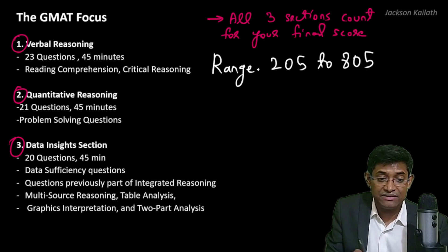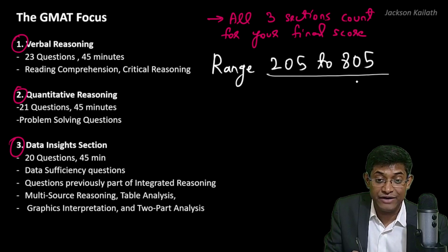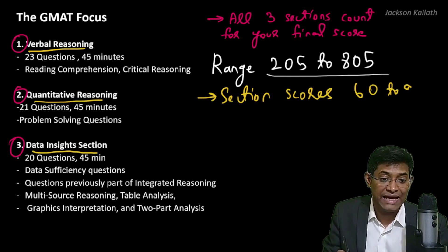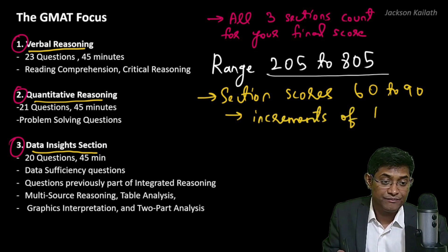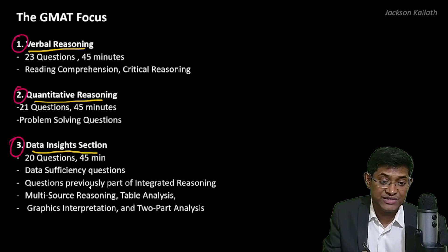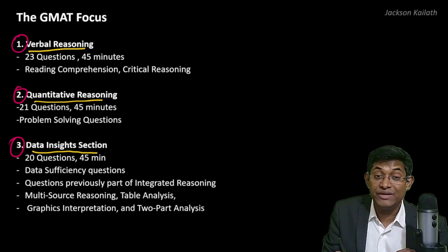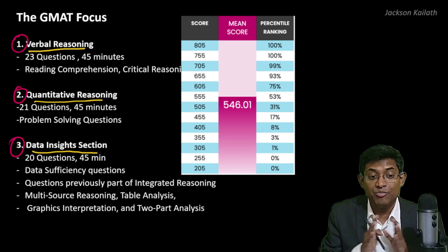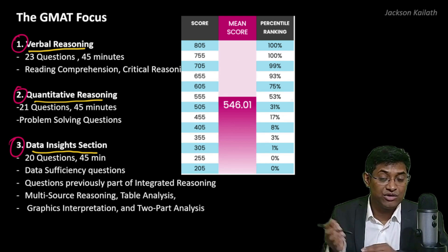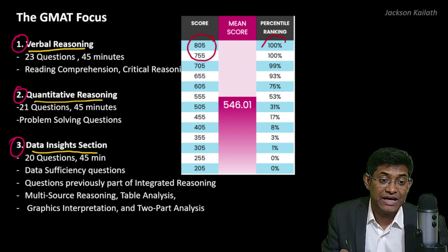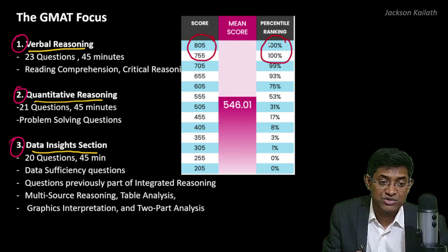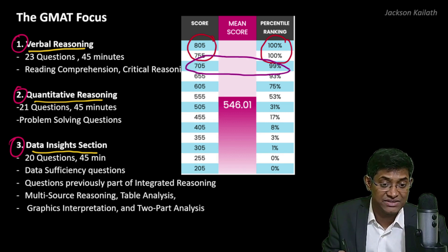The range is between 205 and 805. For individual sections, scores range between 60 and 90 and move in increments of one point. On mba.com there is a chart comparing score and percentile interpretation. Any score between 755 and 805 is considered the 100th percentile, and a 705 is considered the 99th percentile.